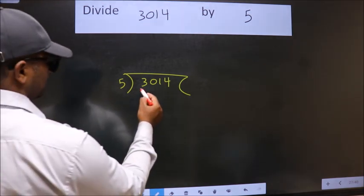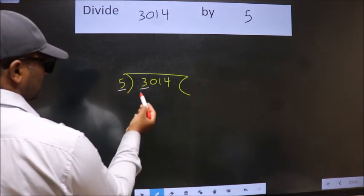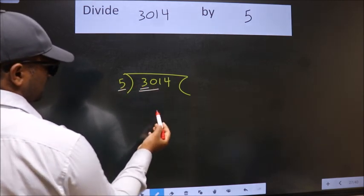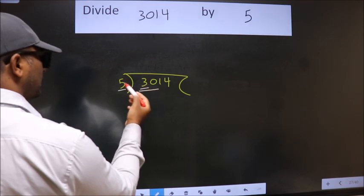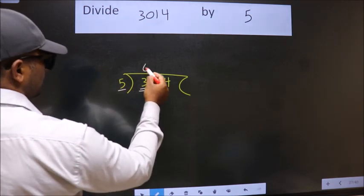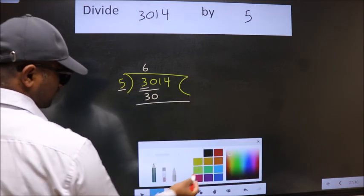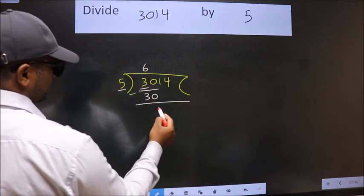Next. Here we have 3. Here 5. 3 is smaller than 5. So we should take 2 numbers, 30. When do we get 30 in 5 table? 5 times 6 is 30. Now we should subtract. We get 0.